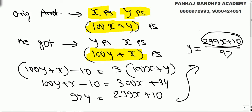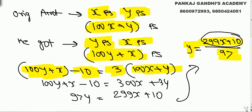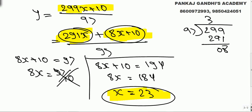To recap: a person had a check of x rupees y paise (100x + y paise); cashier gave him y rupees x paise (100y + x paise). He gave 10 paise to a beggar and the remaining was thrice the original. We need (299x + 10) divisible by 97. We find the nearest multiple of 97, which is 291.